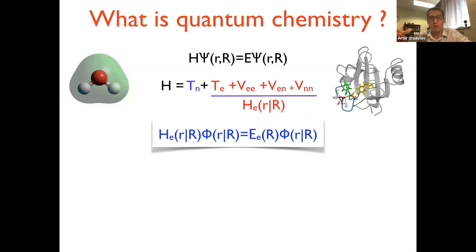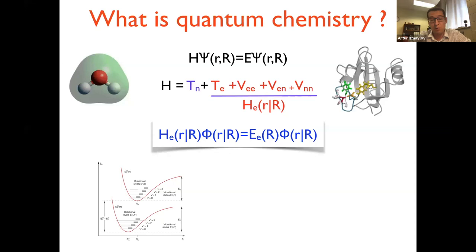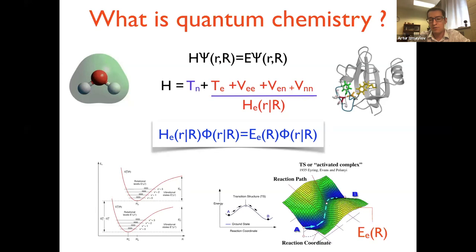With nuclei fixed, we solve the differential equation for electronic variables — that's what we're addressing today with the variational quantum eigen solver. This is useful because the eigenvalues of this problem, the electronic energies, are parametrically dependent on nuclear coordinates. Plotting them as functions of nuclear coordinates gives potential energy surfaces, from which you can get vibrational spectra, various spectroscopies, and information about chemical reaction barriers and rates.